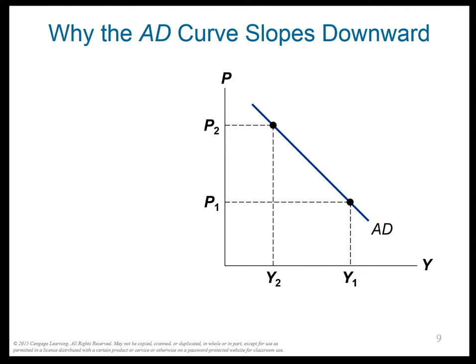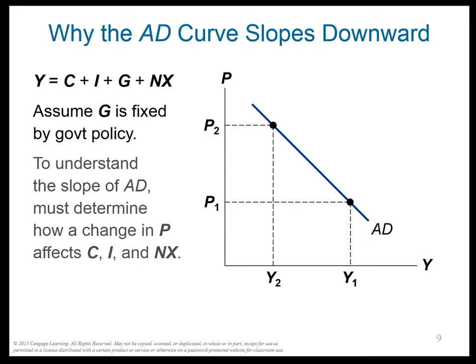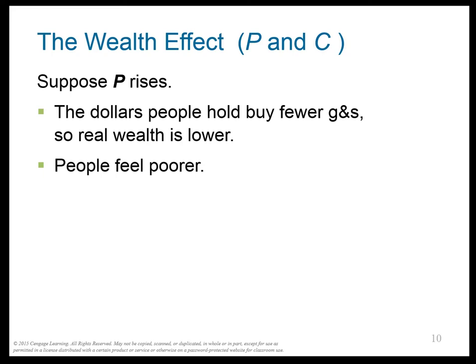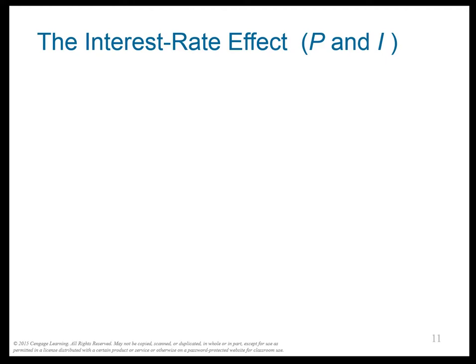Why does the AD curve slope downward? The identity we use is C plus I plus G plus NX. As price goes up, we want to know what happens to these variables. G is fixed by government policy. When P goes up, people feel less rich, their consumption goes down, and that makes GDP go down.